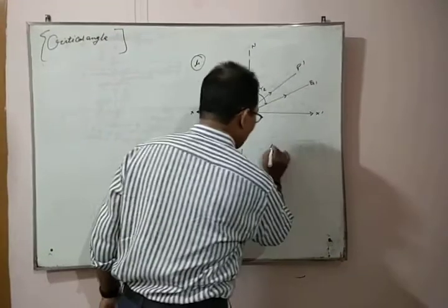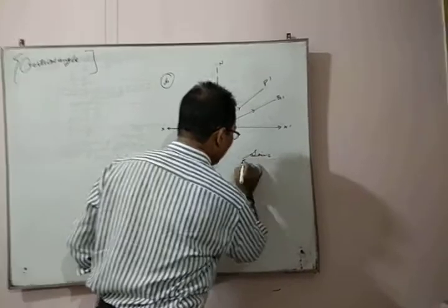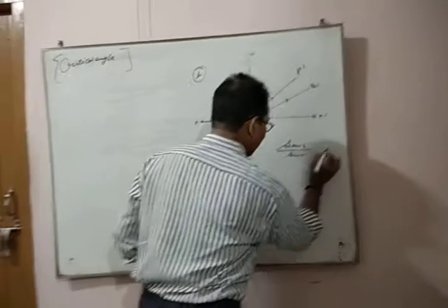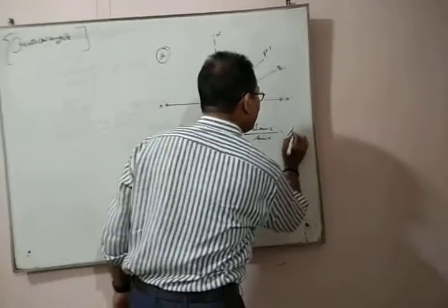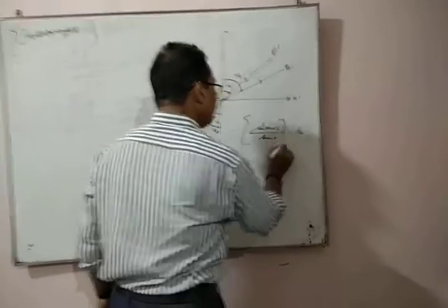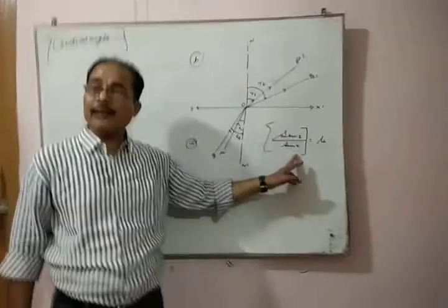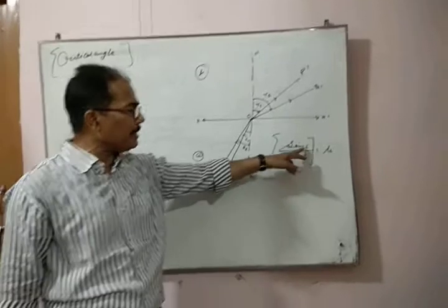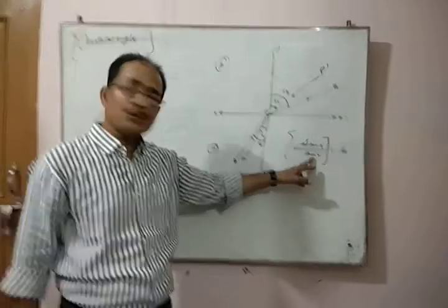According to Snell's law, the ratio of sin i by sin r is constant. Using Snell's law, the ratio of sin i by sin r is constant. This is why whenever the angle of incidence increases, the angle of reflection also increases.